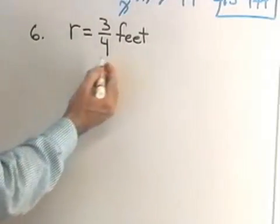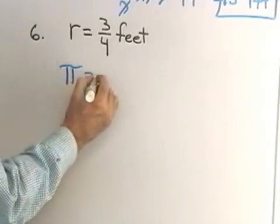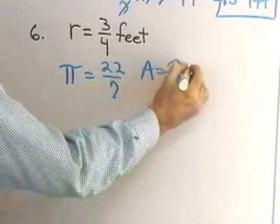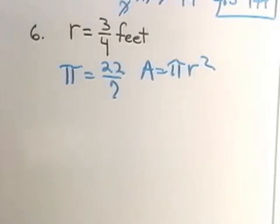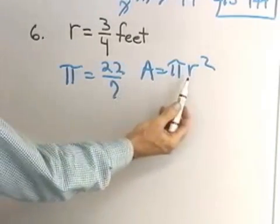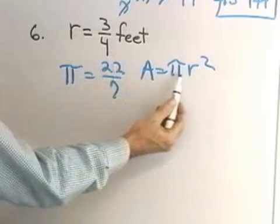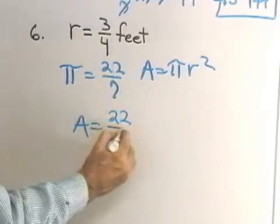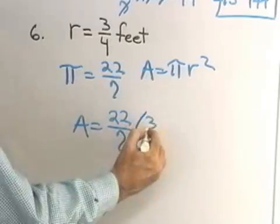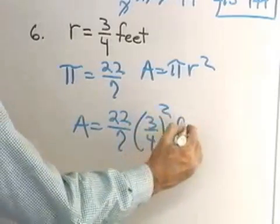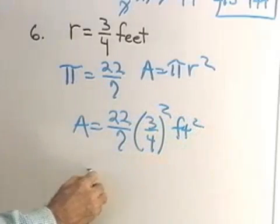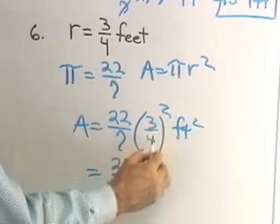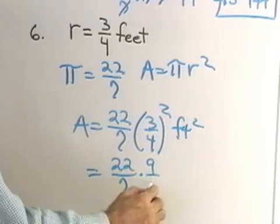r is equal to 3 quarters of a foot, π is equal to 22 over 7, and the area is equal to πr². So I'll substitute both these values, both this value and this value, into this formula, and I end up with A is equal to 22 over 7 times 3 quarters squared, and then I'll just put my feet squared on the outside. So 22 over 7 times, let's see, 3 squared is 9 over 16.